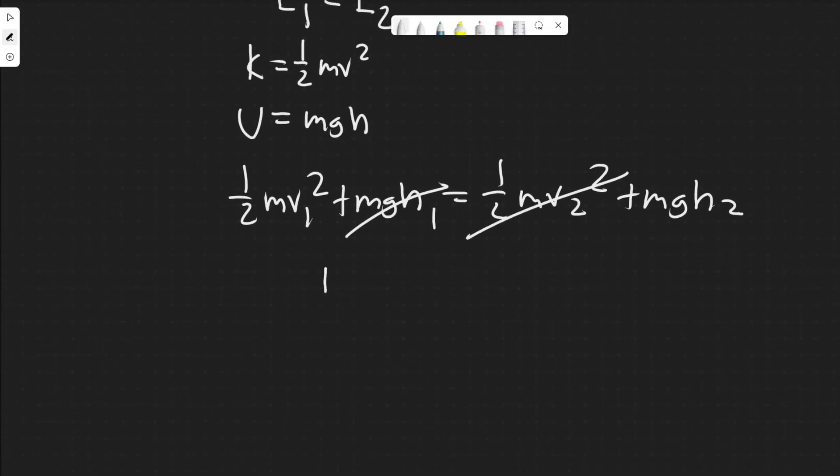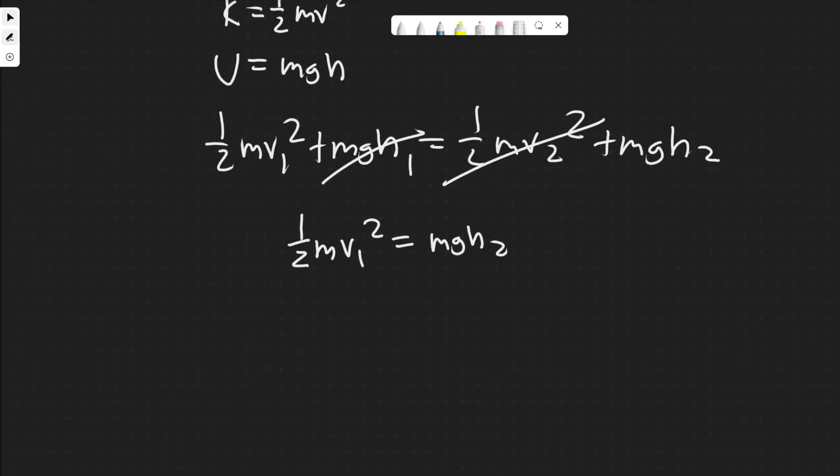So in the end, you would just have one half mv1 squared equals mgh2. We know the initial velocity, and then we can just solve for the height at which they're going to reach. We know v1 is 5. But the first thing you should notice is we have mass on both sides, so they can just cancel. So it just makes it easier to solve. And then we can multiply both sides by 2.